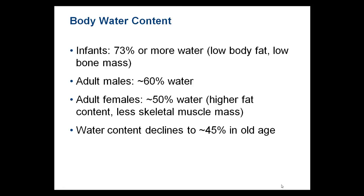Hi everyone. Let's use this video to help us review the electrolyte, pH, and water balance in our system. We'll start with body water content. Infants have 73% or more of their body as water, because the bones have not developed yet and they have low body fat, so most of their body really consists of water.